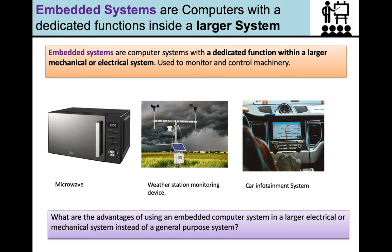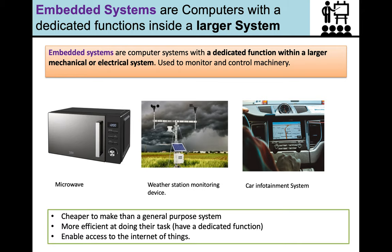So what are some of the advantages of using an embedded system in a larger electrical or mechanical system instead of a general purpose system? Why don't I just attach an iPad to my weather station? Or why don't I plug my microwave into my computer? Well, it's cheaper to make than a general purpose system. My embedded system in a microwave is quite a simple piece of machinery. And it doesn't require too many circuits. So it's also more efficient at doing its task as it has a dedicated function. And it is going to enable us to access the internet of things. And that's something that's developing a lot more in terms of dedicated systems and embedded systems.